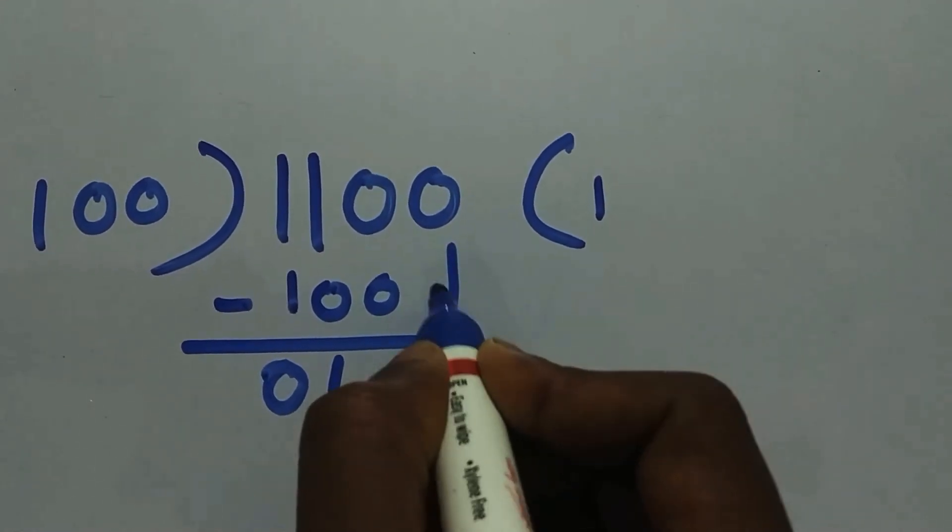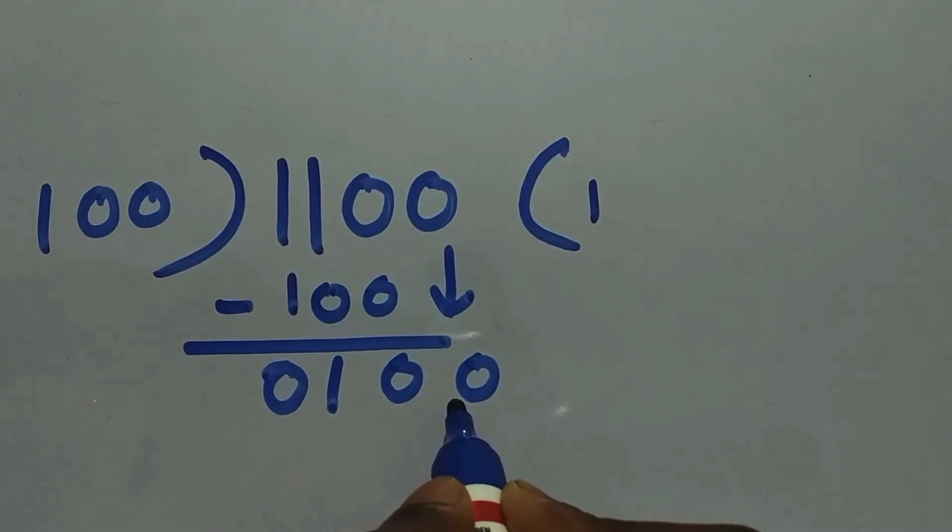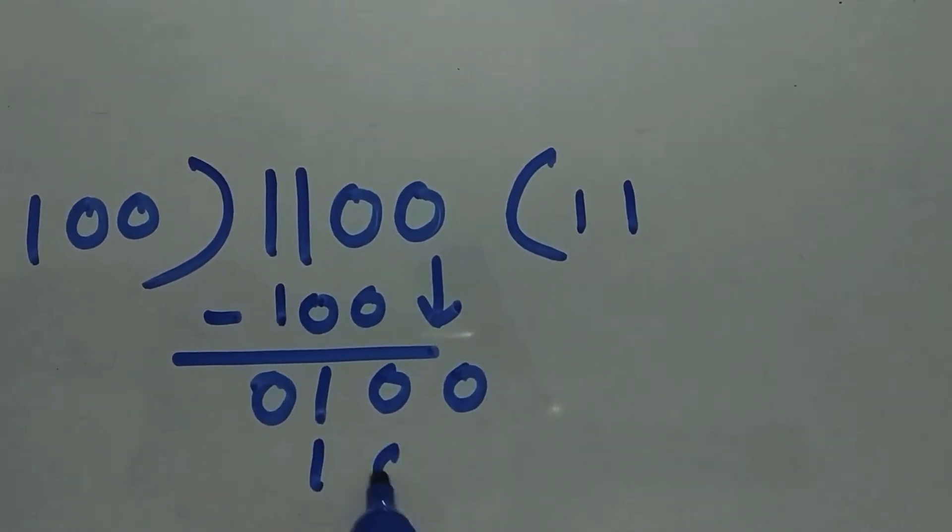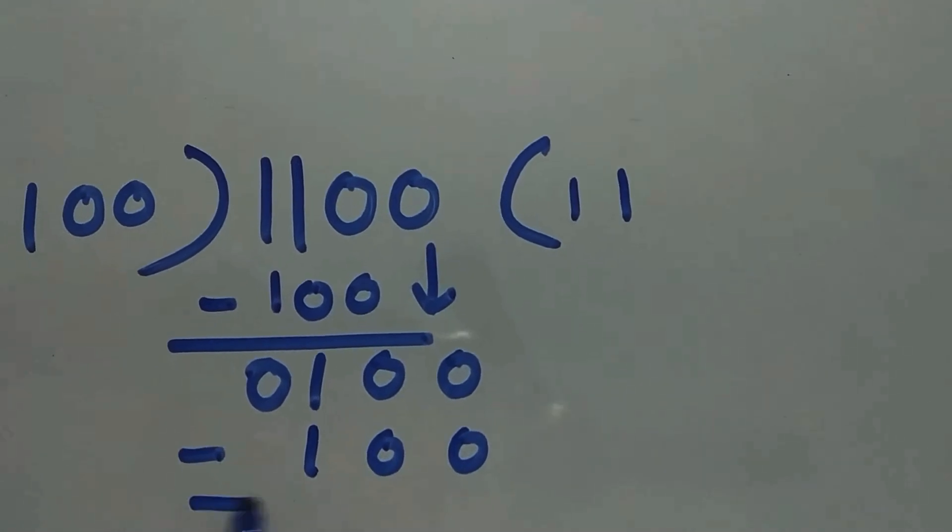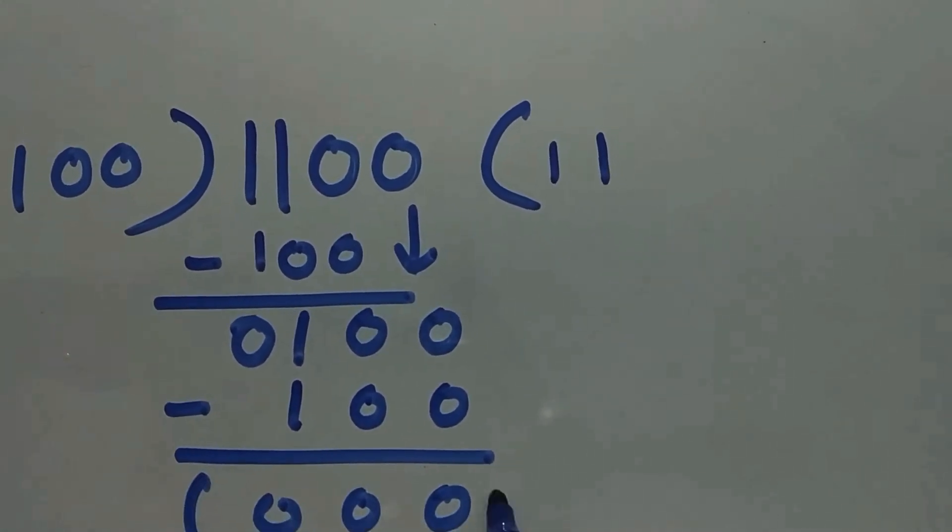We need to bring the extra value now, so it's 100. 100 multiplied by 1, we get 100. We need to subtract it. What's the remainder? Remainder is 000. This is our remainder.